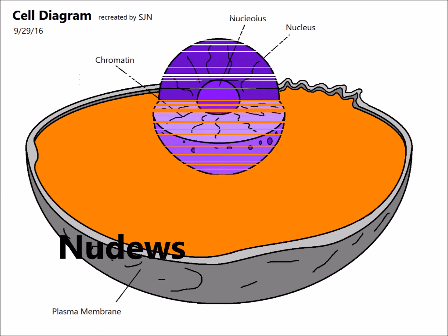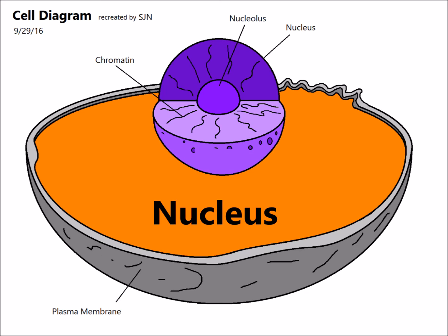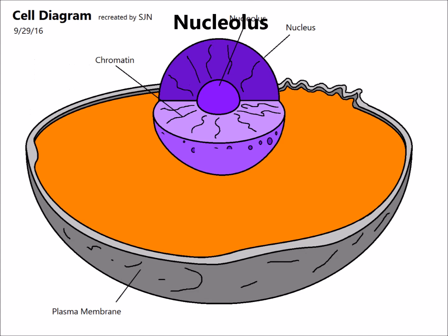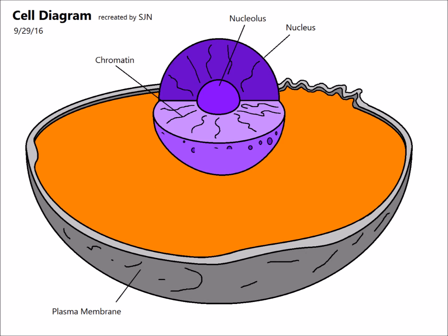Moving on to the nucleus — it is the control center of the cell that stores hereditary information and instructions. It contains the nucleolus and the chromatin. In this cell diagram, I colored the nucleus purple.